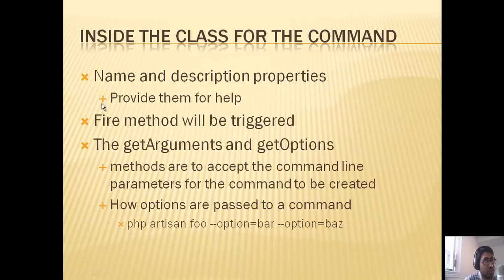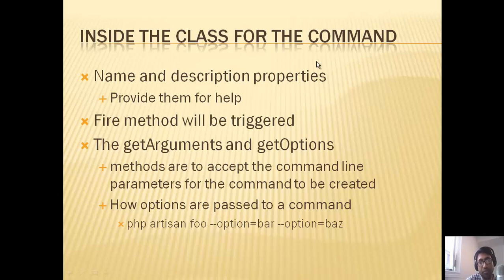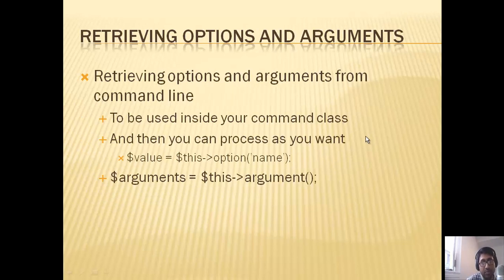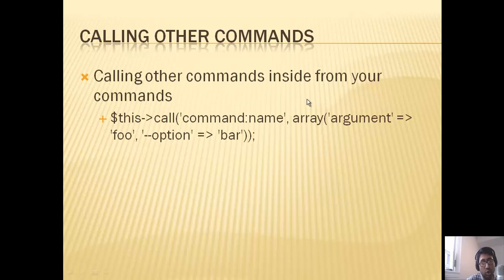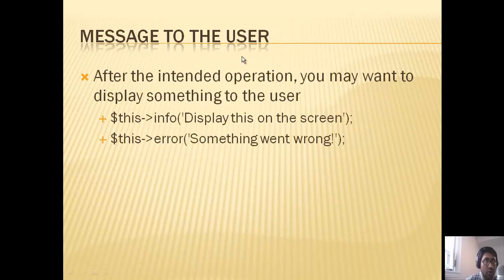Inside the command class, there are two properties — name and description — that you need to fill in, which will appear in the command list. The fire method will be triggered when someone runs your custom command, so you define the actions inside it. You can use getArguments and getOptions to get user-supplied arguments and options. From your command, if you want to make use of another command, you can use the appropriate syntax to execute it. To inform the user during or after execution, you can use this->info or this->error.